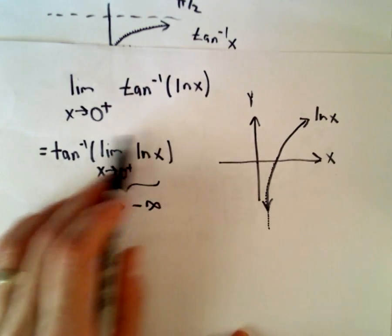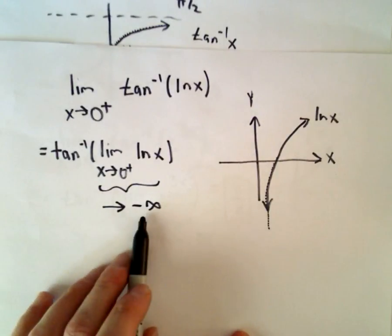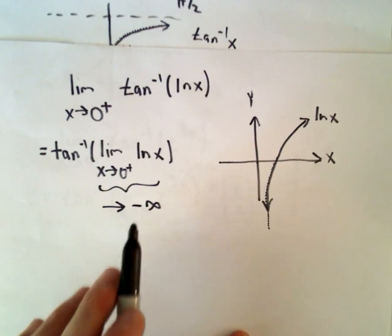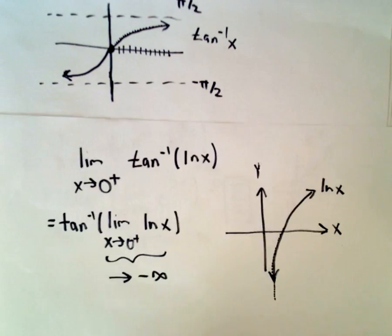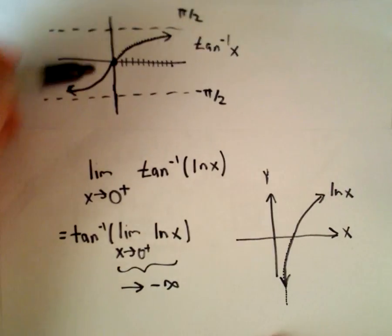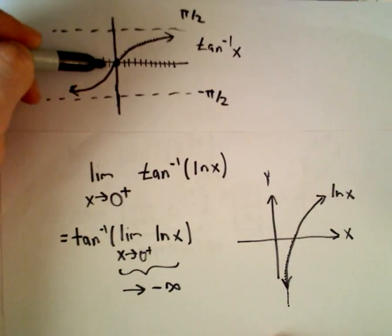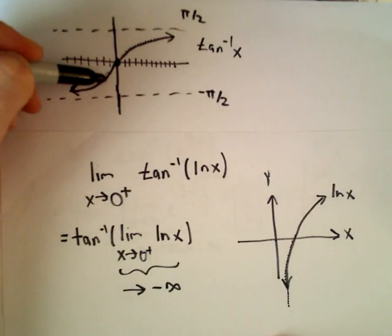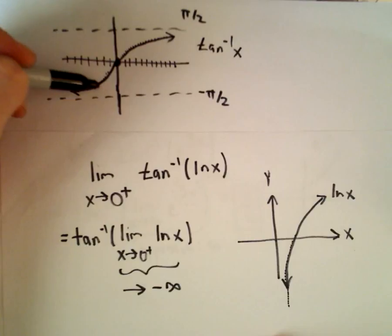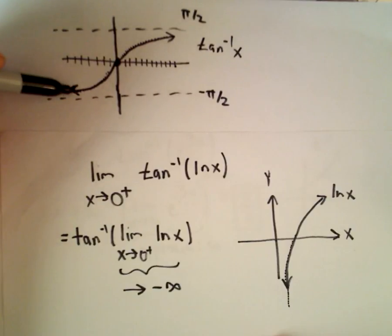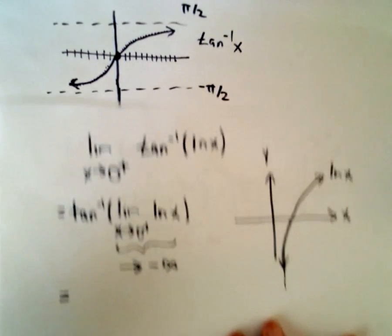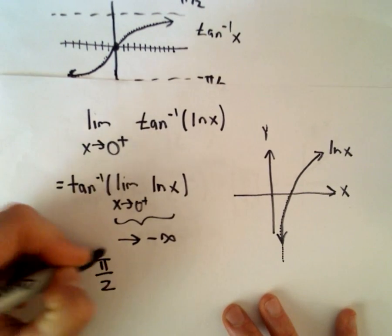The numbers inside are becoming more and more negative. So now on the inverse tangent graph, as the x coordinates go from negative 10 to negative 100, negative 1000, and so on, the y values start approaching the asymptote at negative pi over 2. So the limit as x approaches 0 from the right of arctangent of ln x equals negative pi over 2.